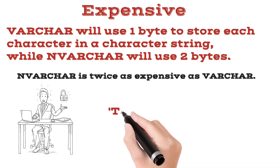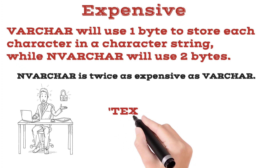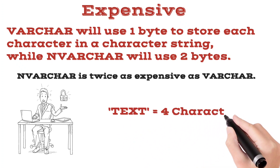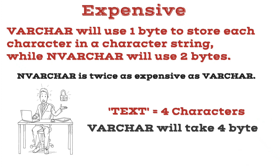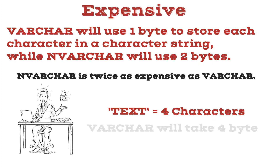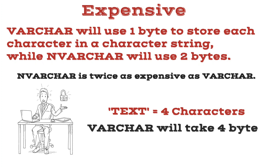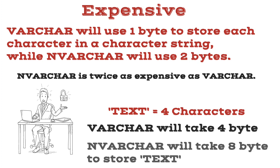The word 'text' has four characters. If we use VARCHAR as the data type, SQL Server will use one byte per character to store this value in memory. Therefore, the word 'text' will use four bytes of memory. If we use NVARCHAR as the data type instead, SQL Server will use two bytes per character to store this value in memory. Therefore, the word 'text' would use eight bytes of memory.